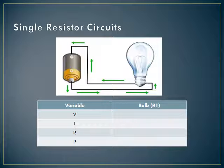V is voltage, I is current, R is resistance, and P is power. You're going to set up your table like this, and every resistor in the circuit should get its own column. If there's more than one, you'll add a column for the total, which is kind of like what's happening at the battery. Since we only have one resistor here, it's the only place that energy is going to be able to be used up, so we only need one column.